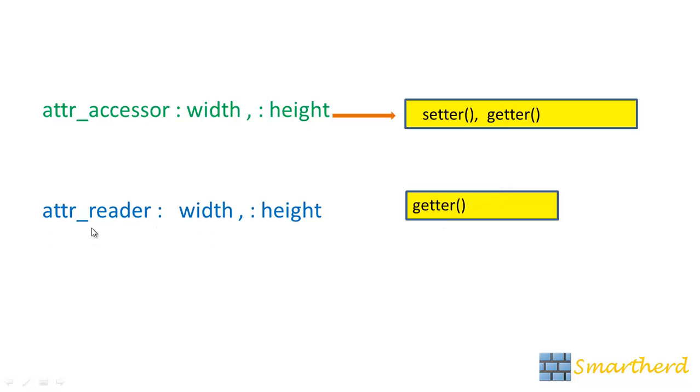For that we have a code attr underscore reader colon width comma colon height. In this case only the attr accessor is getting replaced by attr reader. So all the syntax are same except this keyword attr reader.